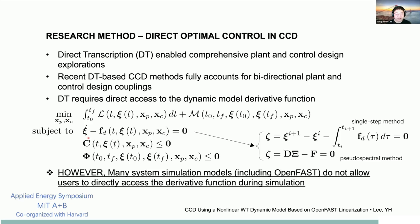The dynamic model constraint requires solving the state derivative function. However, many system simulation models, including OpenFAST, do not allow users to directly access the derivative function during simulation.